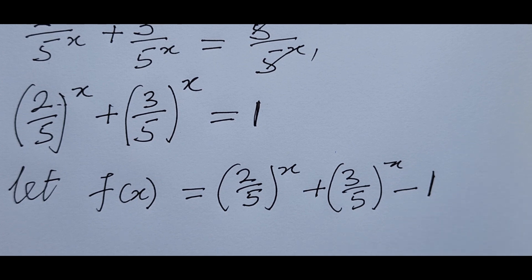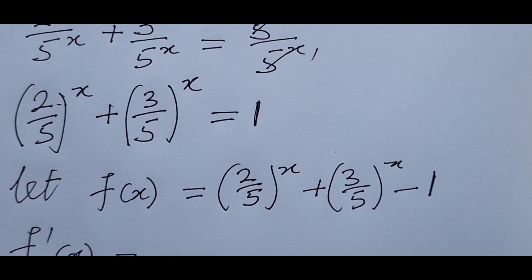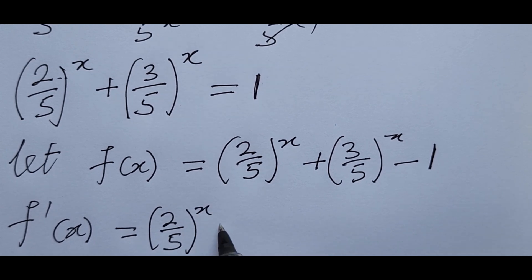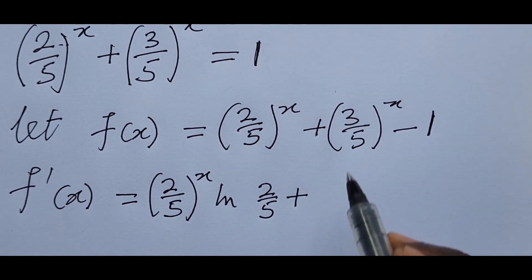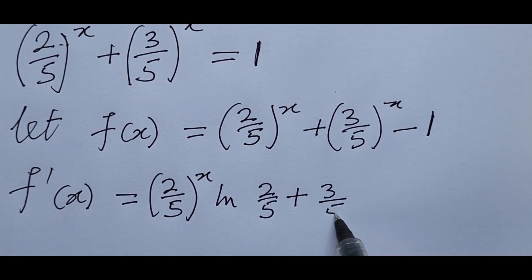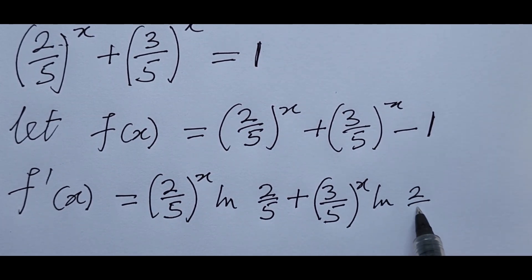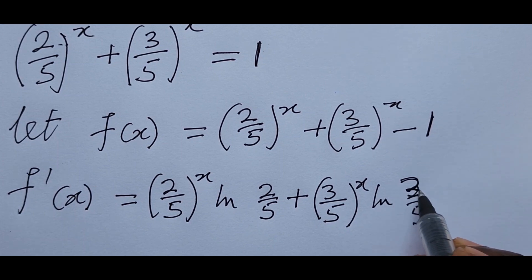Differentiating f(x), we get f'(x) = (2/5)^x · ln(2/5) + (3/5)^x · ln(3/5). Differentiating the constant −1 gives us 0.